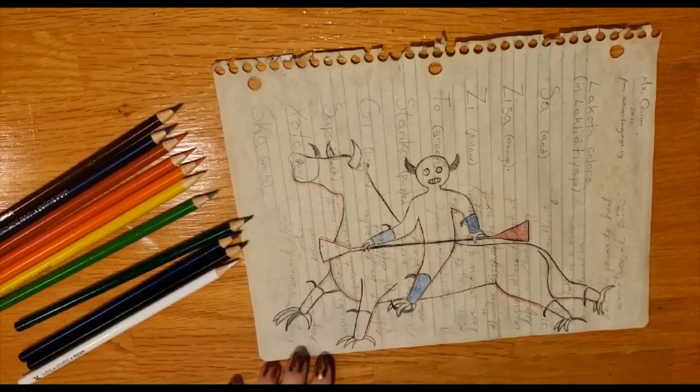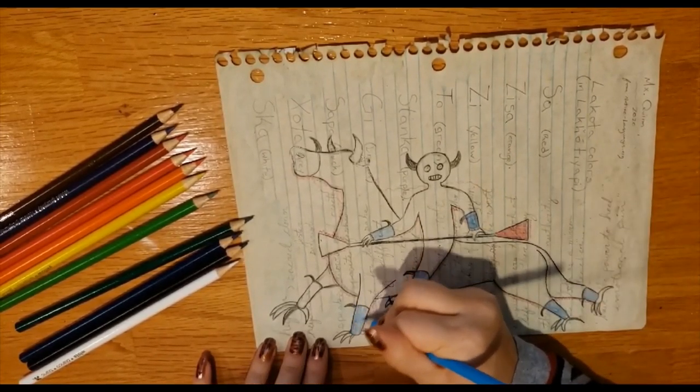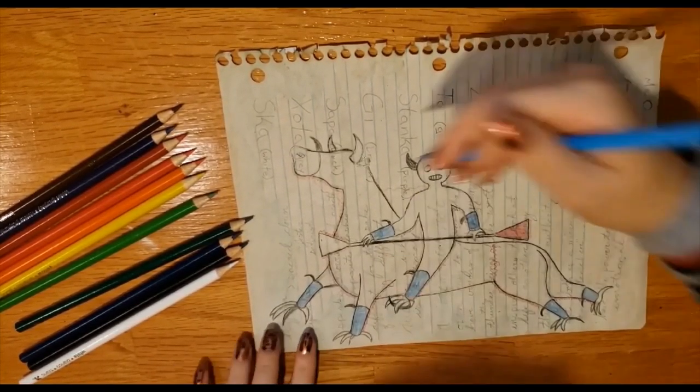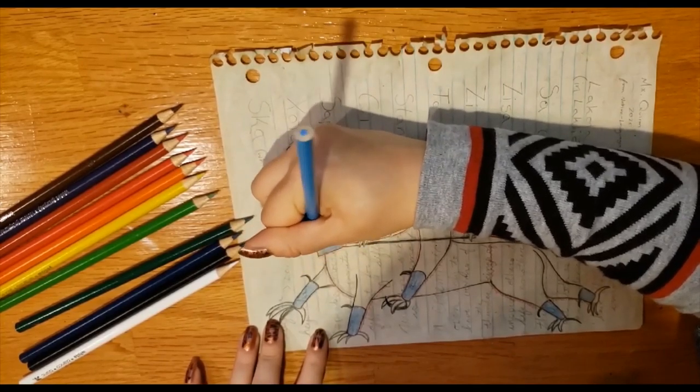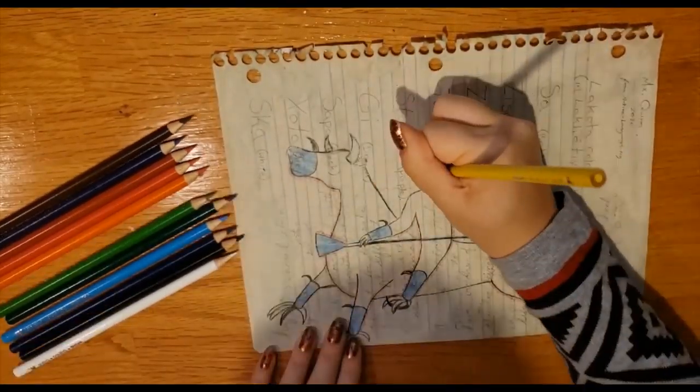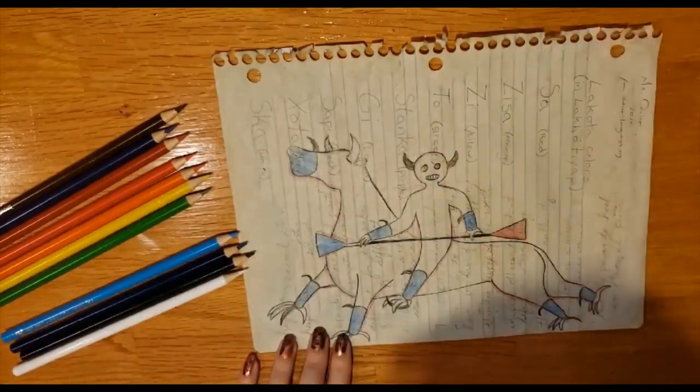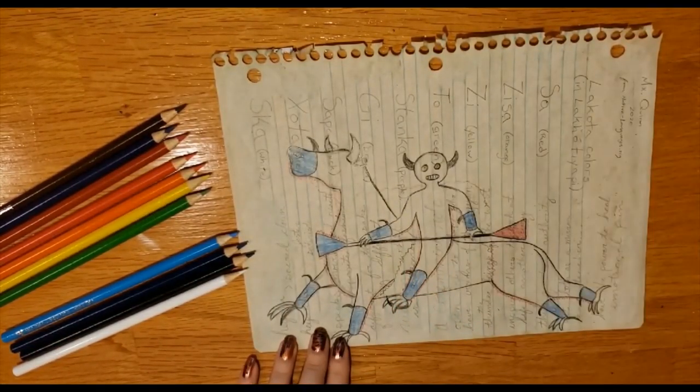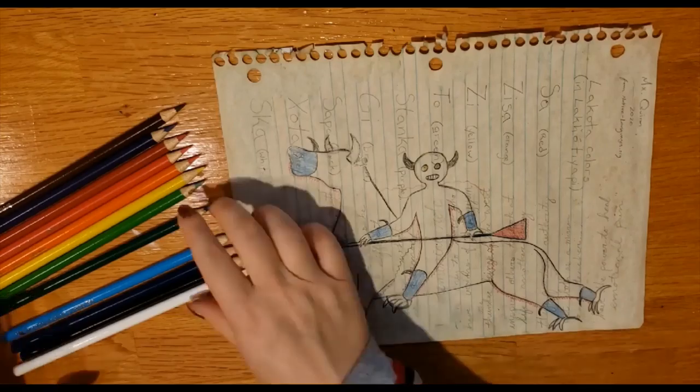Now I'm coloring in the arm bracers and shin guards. I like how the Heoka and his mount have matching blue regalia. Heoka is also said to use the wind as sticks to beat the drum of thunder. I think that's what he's holding in this picture.